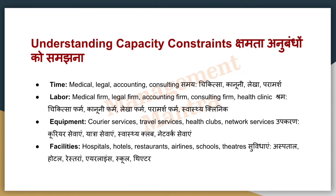Second is labor — in your medical firm, legal firm, accounting firm, consulting firm, or health clinic, you should have proper employees to work. Third is equipment — you should have all resources, tools, and equipment. This applies to courier services, travel services, health clubs, and network services — you should have a strong delivery system to complete the demand. Fourth is facilities — hospitals, hotels, restaurants, airlines, schools, and theatres. You have to see capacity limits relative to demand.